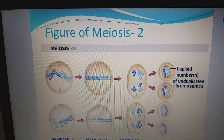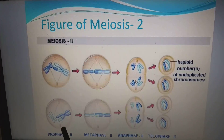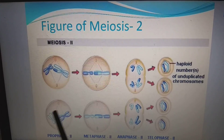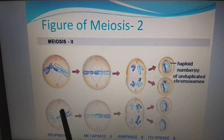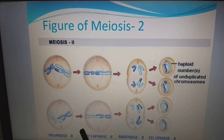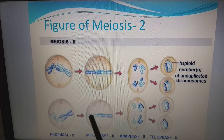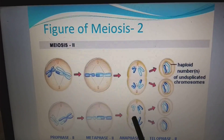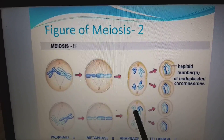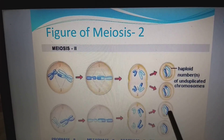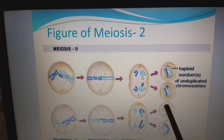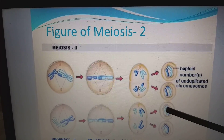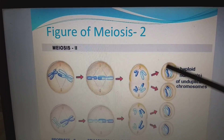In the figures of meiosis II: in prophase 2, the nucleolus and nuclear membrane dissolve and chromosomes appear. In metaphase 2, chromosomes align in the center. In anaphase 2, the centromere splits and sister chromatids separate forming individual chromosomes. After telophase 2, two separate nuclei are seen, and finally four daughter cells are formed, each with a haploid number of chromosomes.